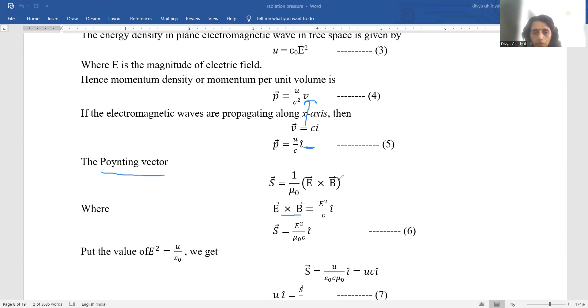So s becomes equal to e square upon mu naught c. Putting this value of e square now which we had from the derivation which is equal to u upon epsilon naught we get s is equal to u upon epsilon naught mu naught c i